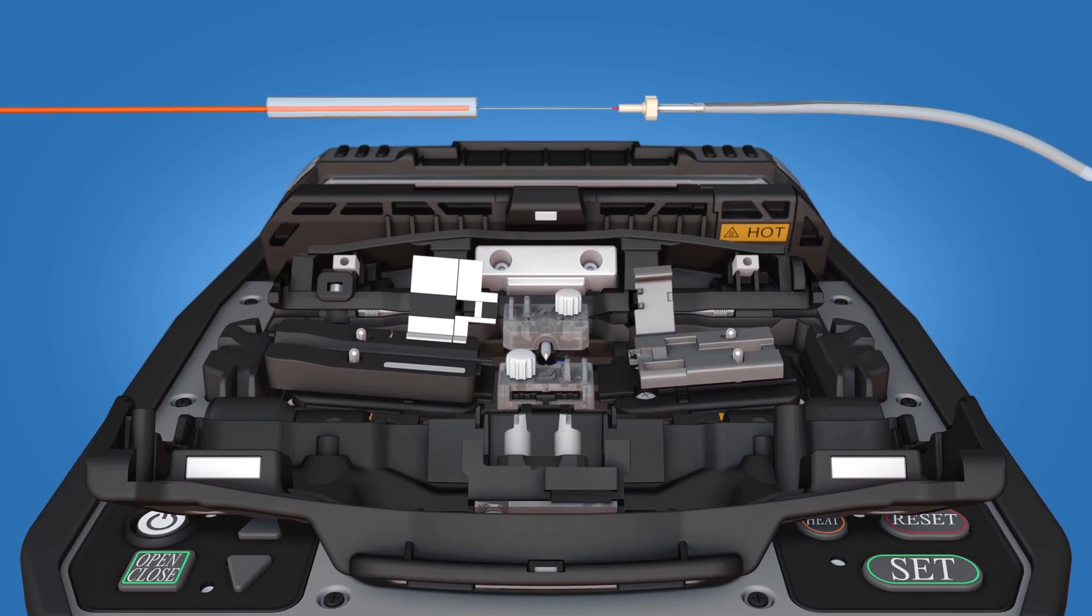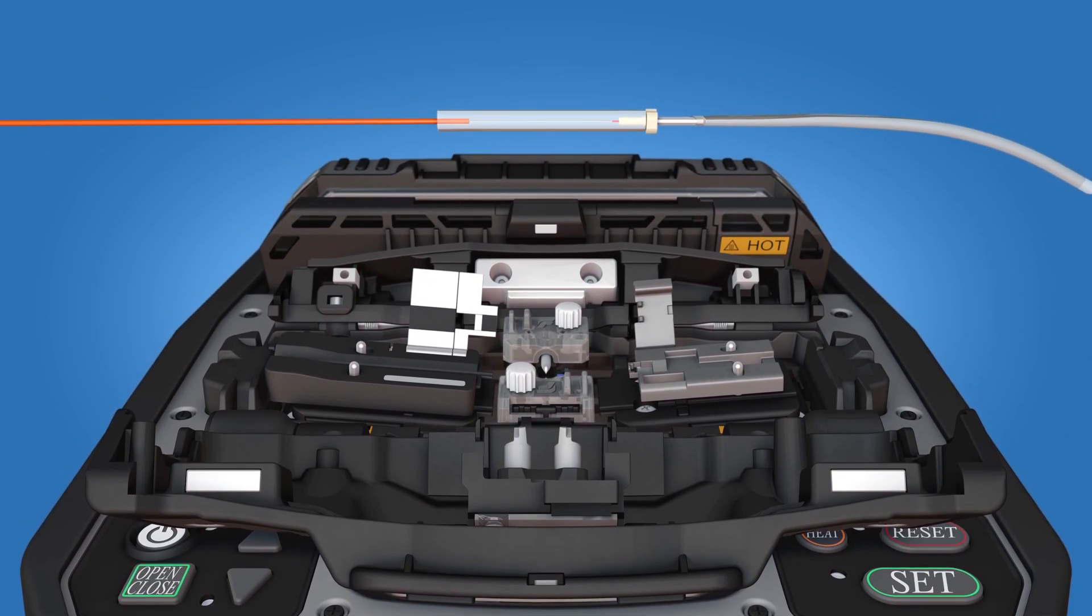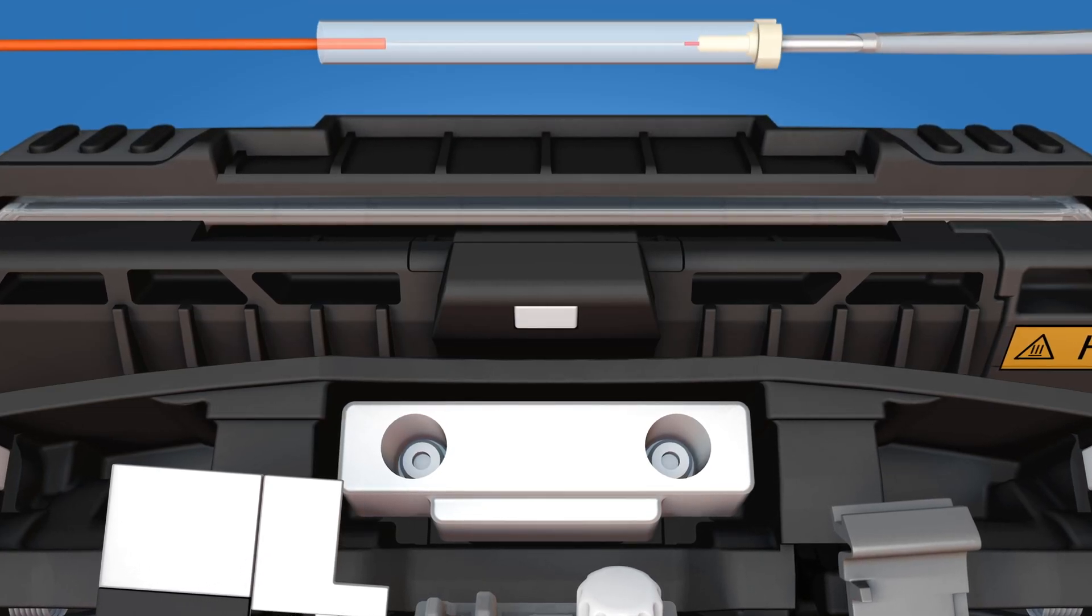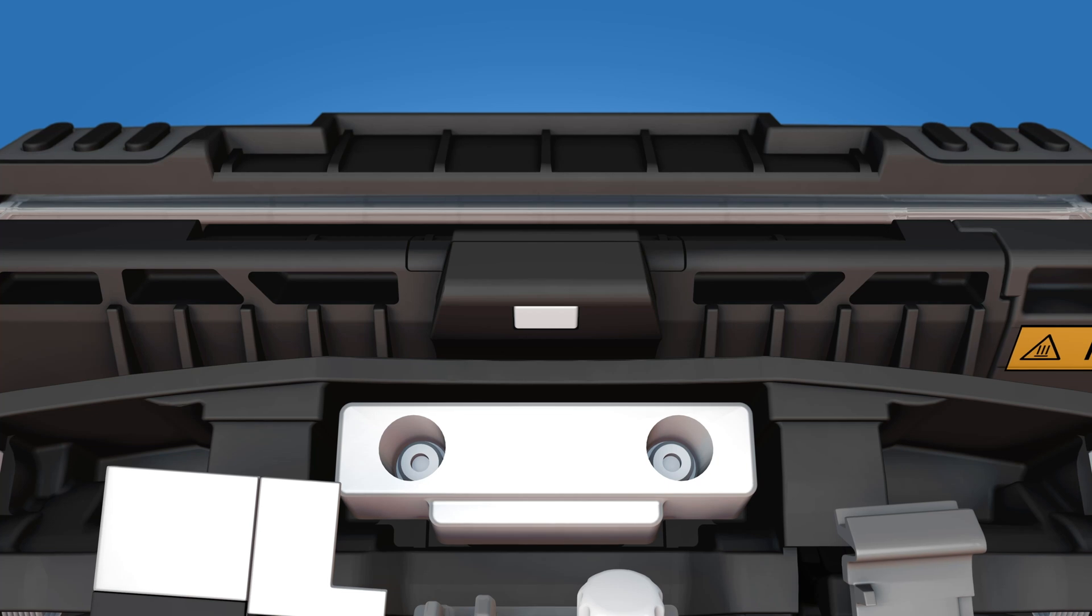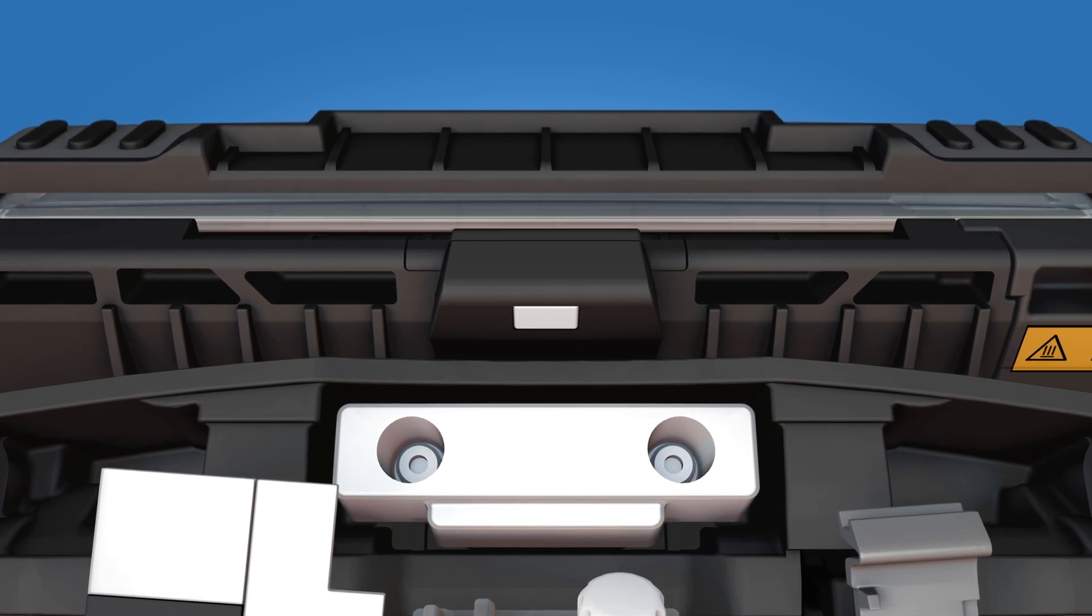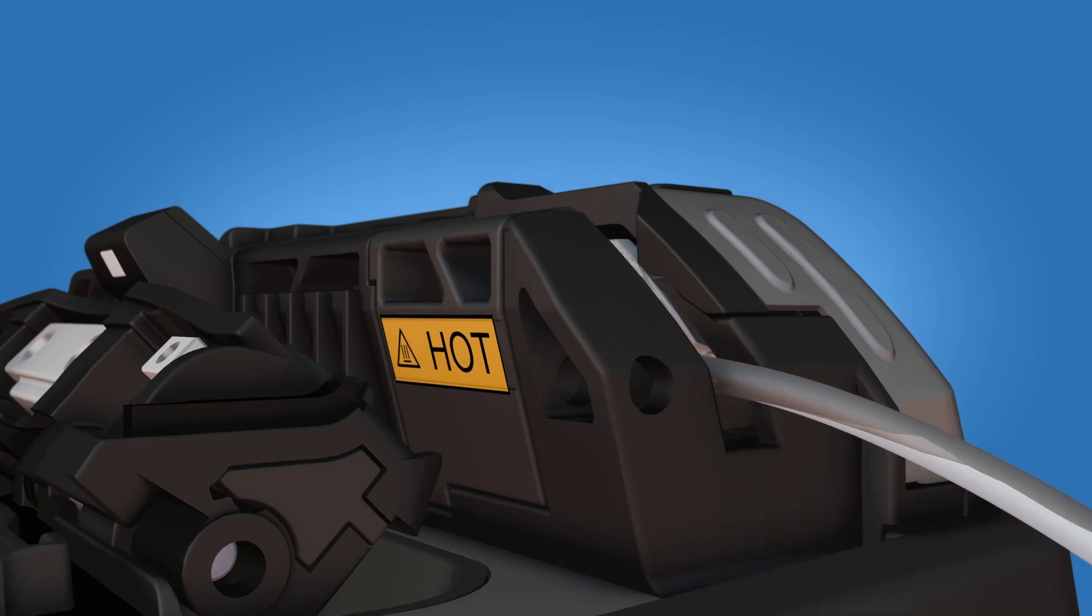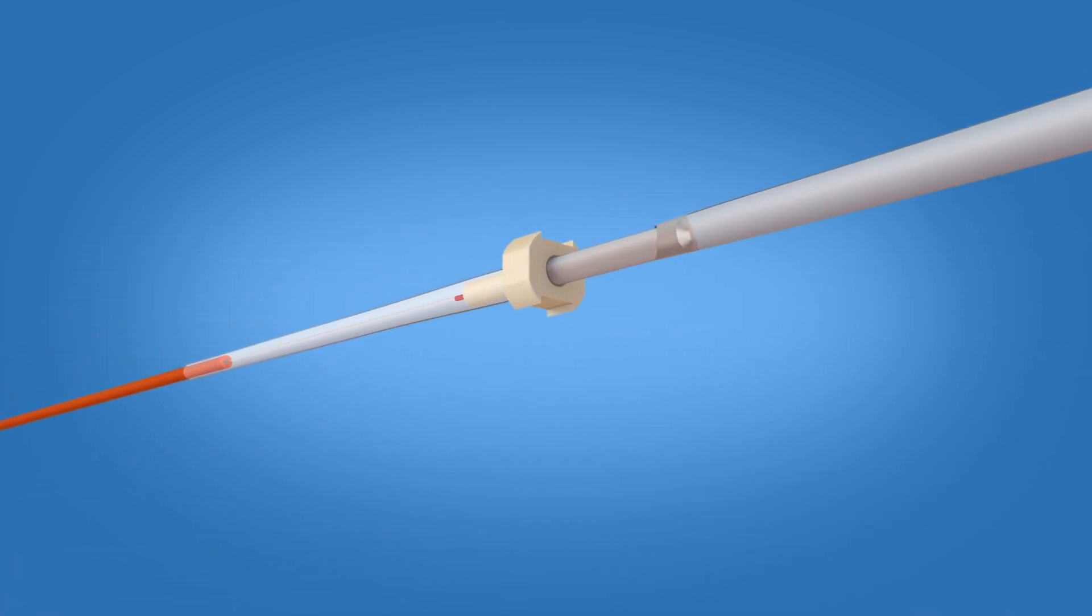Slide the protective sleeve over the splice so that it is flush with the ferrule unit. Position the sleeve in the center of the heater while continuing to maintain contact with the ferrule. Heat the protective sleeve. After allowing one minute for the sleeve to cool, remove the assembly from the heater.